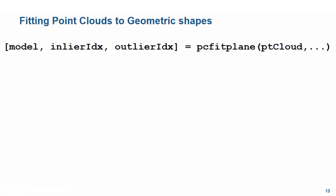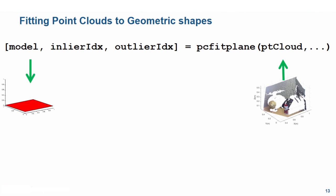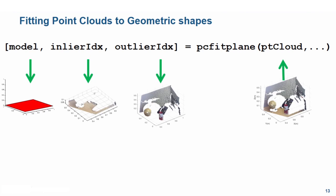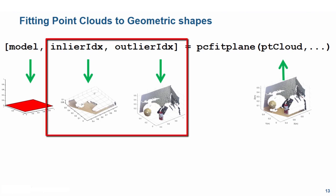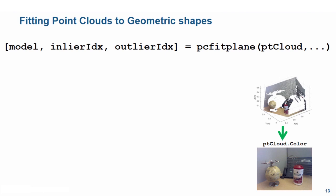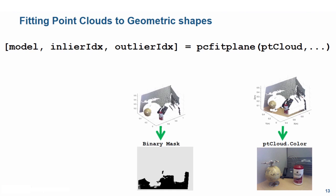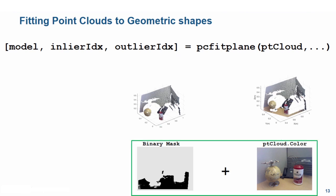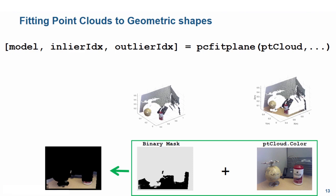All three functions have a pretty similar syntax, so let's concentrate on pcfitplane. One of the inputs pcfitplane takes is the original point cloud. It gives three outputs: the geometric model of the shape being fitted (in this case, a plane), the inlier indices corresponding to the ground plane, and all the outlier indices — all other indices outside the area of interest. These inlier and outlier indices prove very handy in removing unnecessary objects from images. 3D point clouds usually have a color property which contains the original image they were created from. Using the outlier indices, we can create a binary mask where all the outliers show up as true, and apply it on the original image to get only the area of interest.